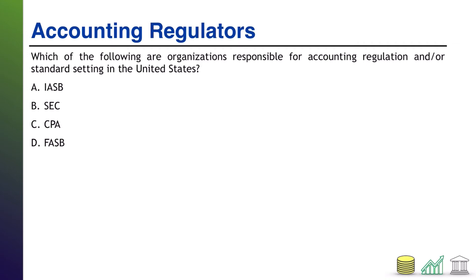All right, welcome back. Going in order, which are responsible for accounting regulation and/or standard setting in the United States? The IASB is not responsible for these items in the United States. The IASB is responsible for the International Financial Reporting Standards followed by many other countries, but not the United States. The SEC is definitely one of the responsible parties — they are the ones legally responsible for setting standards, but they delegate that authority out and focus more on enforcing the rules.